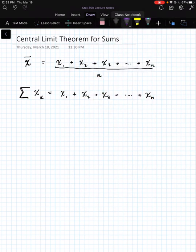The only difference, really, is we're dividing by how many we have, n. And here is where we have our new result, which is the central limit theorem for sums.